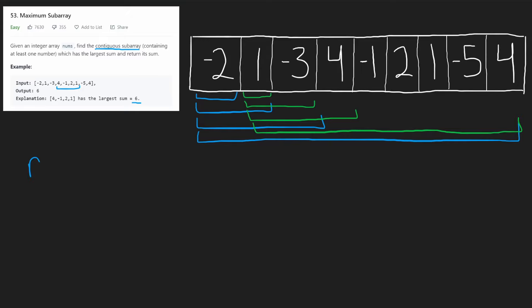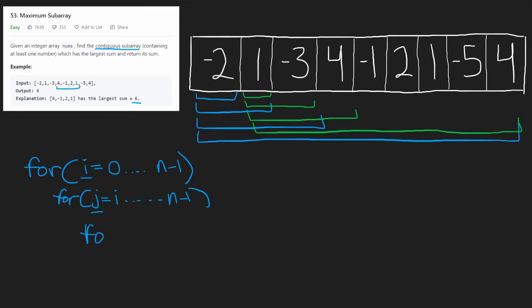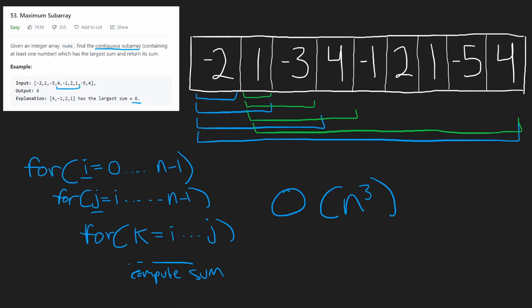Let's write the pseudocode to see what kind of complexity this would yield. i is going to represent the starting value, ranging from zero all the way to n minus one. Then j represents the ending index, starting at i and going until n minus one. To compute the sum of this subarray, we use a third loop with k ranging from i to j, and inside we compute the sum. This is really inefficient — the time complexity is O(n³) because we have three nested loops.